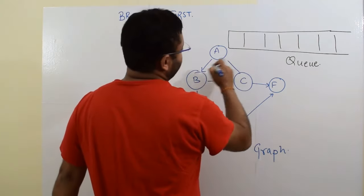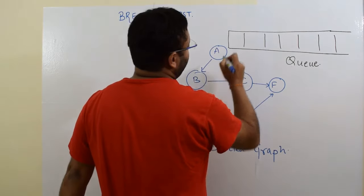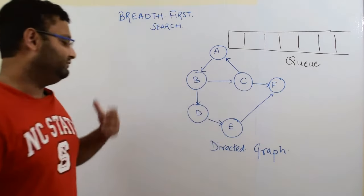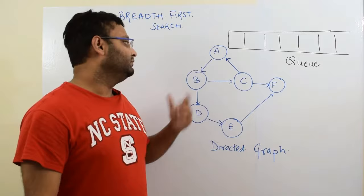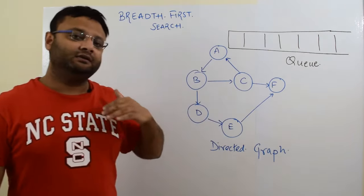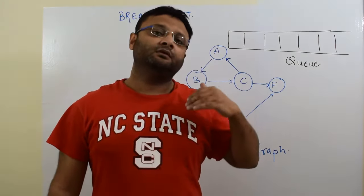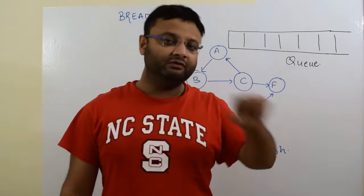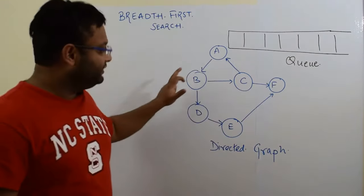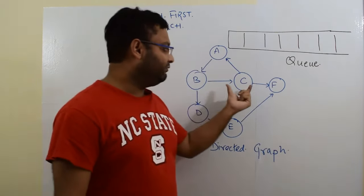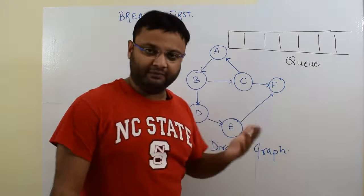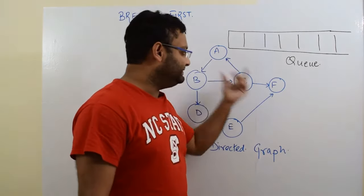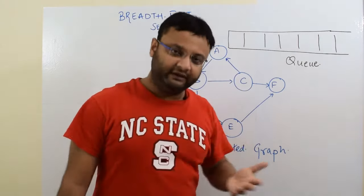Only neighbor of A which will be counted this time is B. The point is that the definition of neighbor will be the nodes to which you can reach. Those will be counted as neighbors. From A, you can reach B. Definitely you cannot reach C. For C, A is the neighbor, but for A, in this case, C is not the neighbor.